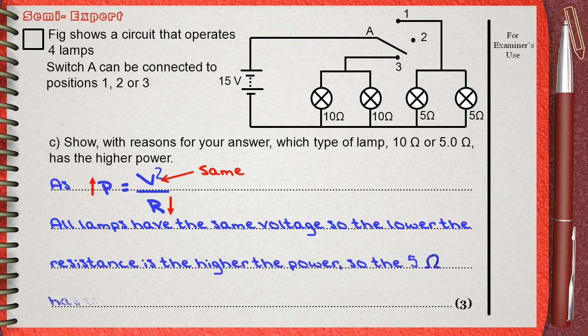All lamps have the same voltage, so the lower the resistance is, the higher the power. So the 5 ohm has the higher power.